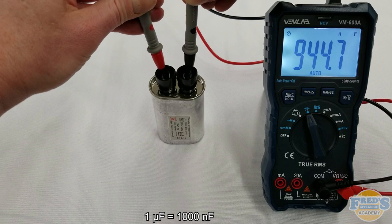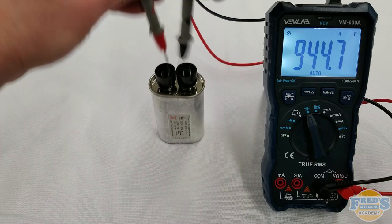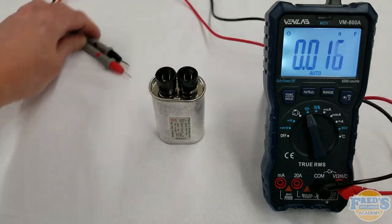If the capacitor is out of range by the allowed amount given on the label, or the meter reads OL at any time, the capacitor has failed and needs to be replaced.